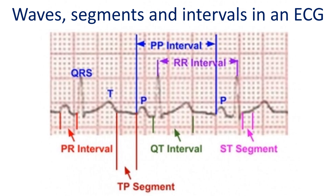Intervals contain one or more waves and a segment. The PR interval contains the P wave and the PR segment, and is measured from the onset of the P wave to the onset of the QRS complex. The QT interval contains the QRS complex, ST segment, and the T wave, measured from the onset of the QRS complex to the end of the T wave. The PP interval is measured from the onset of one P wave to the onset of the next P wave, and the RR interval is measured between the peaks of two consecutive R waves.